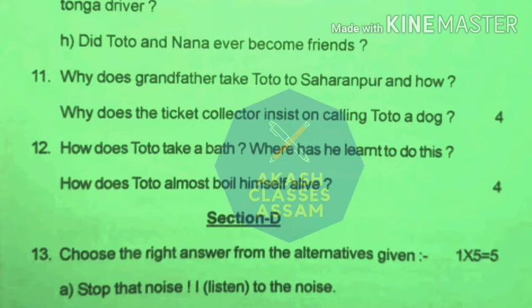Question number 12 asks how does Toto take a bath and where has he learnt to do so. Also, how does Toto almost boil himself alive?